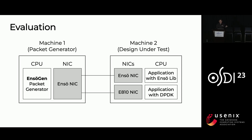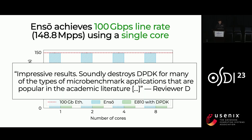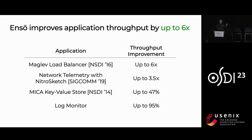Because it's based on ANSO, ANSOGEN can deliver full packet rate even with minimum-sized packets on a single CPU core. And in fact, when evaluating a NIC server that modifies every packet and sends them back, ANSO becomes bottlenecked by 100 Gigabit Ethernet, even with a single core and minimum-sized packets. As Reviewer D put it, ANSO handily destroys DPDK across many types of microbenchmark applications. We ported four different applications to ANSO and saw throughput improvements of as much as six times compared to DPDK.